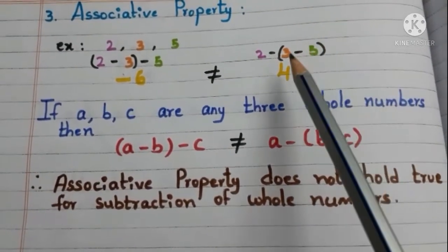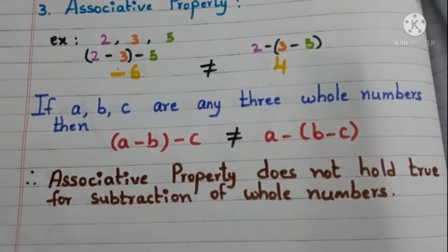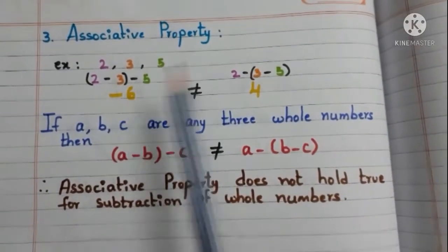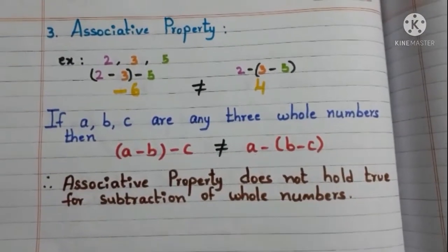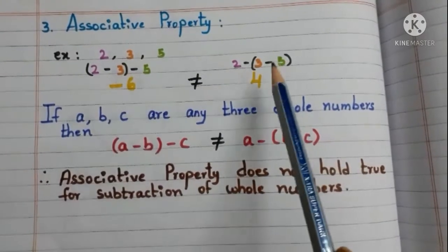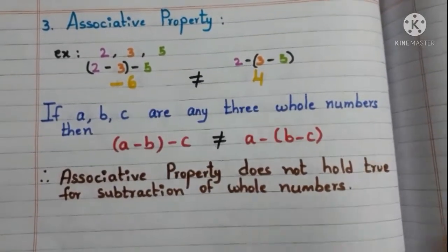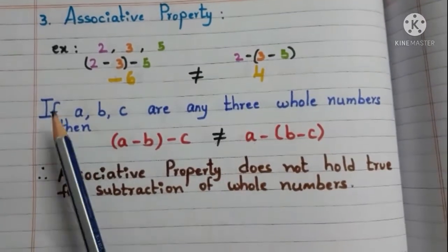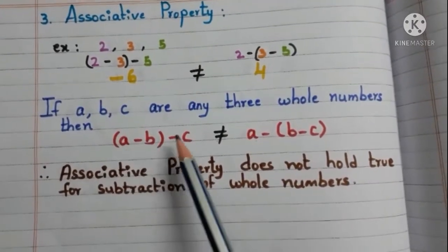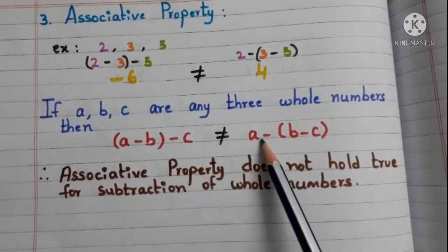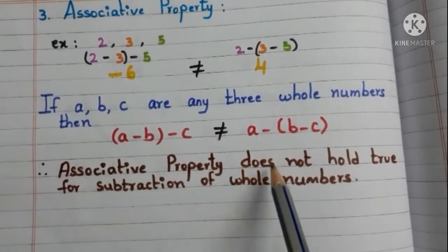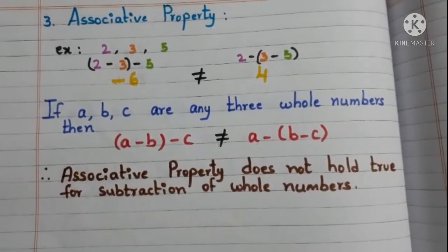Now, first find the difference of 3 and 5, and take that away from 2. We get the answer 4. Here, we can observe that if you change the grouping and find the difference, we are getting different answers. So, if a, b, c are any three whole numbers, then (a minus b) minus c is not equal to a minus (b minus c). Therefore, we can conclude that associative property does not hold true for subtraction of whole numbers.